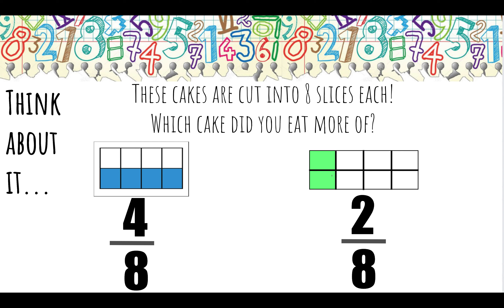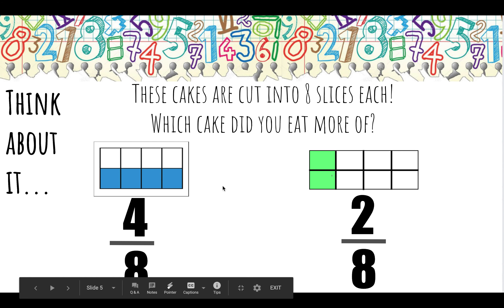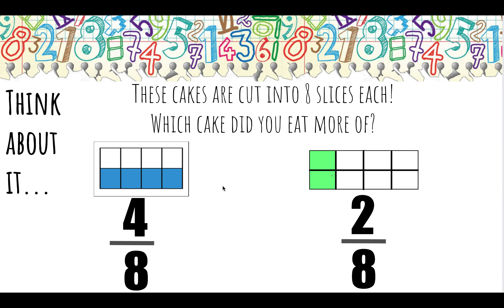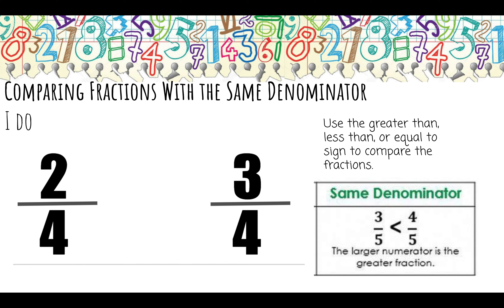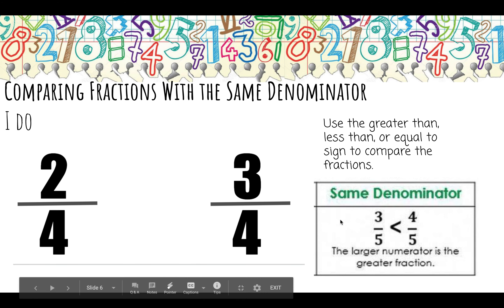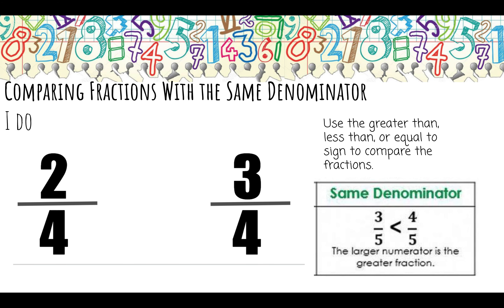Let's think about this. Both of these cakes are cut into eight slices each. On the left-hand side, I ate four out of the eight pieces. On the right-hand side, I ate two out of the eight pieces. Both cakes have eight pieces total, but on the left I ate four pieces, and on the right I ate two pieces. So which cake did I eat more of? If my fractions have the same denominator, the fraction with the larger numerator is the greater fraction.